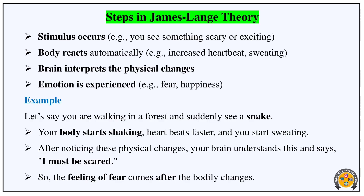Let's talk about the steps of the James-Lange theory. A stimulus occurs — for instance, you see something scary or exciting, like a danger or a fear-inducing situation. The body then reacts automatically: increased heartbeat, sweating, and so on.